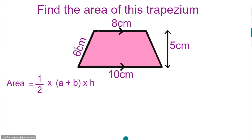Please notice that the 6 cm sloping side is not the height, so we're not going to use it. If we solve this, we already have the formula given to us here.